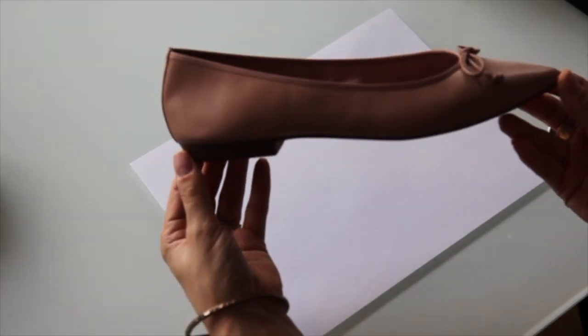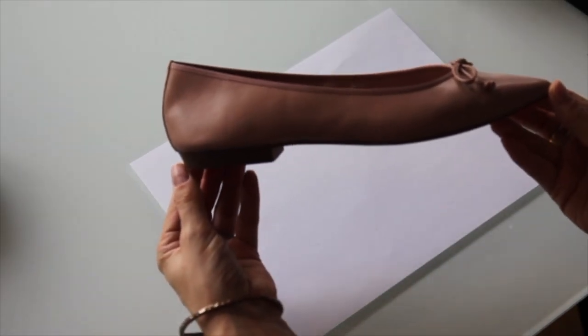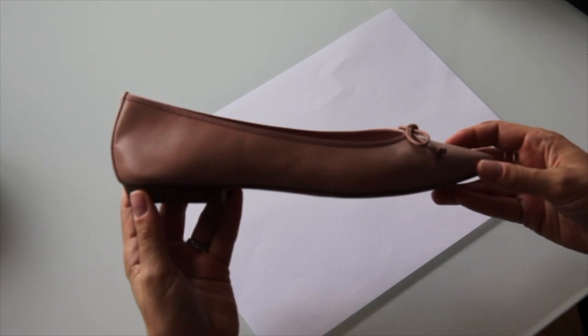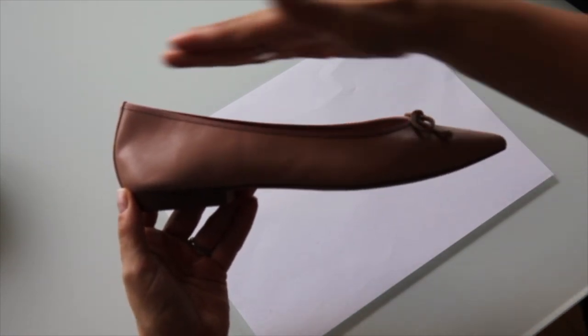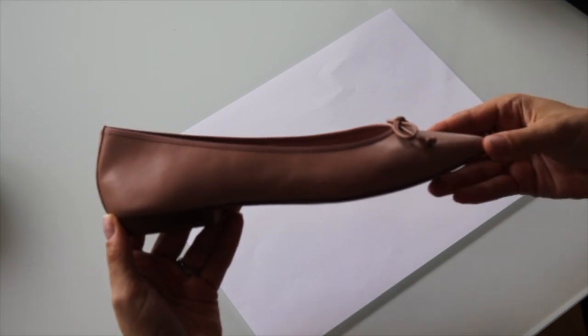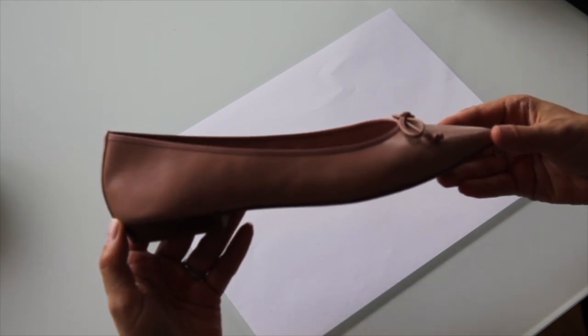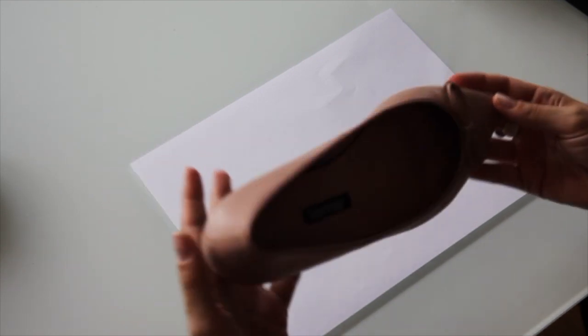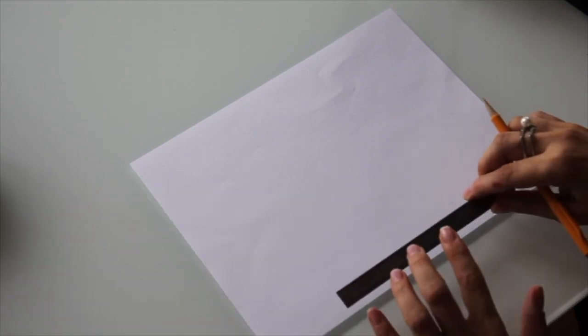Basically, in a side view the shoe is going to look something like this. A couple of issues that you may run into is drawing this curve, and then also drawing the bow from the side can be a little bit tricky. But we're going to walk you through it right now.